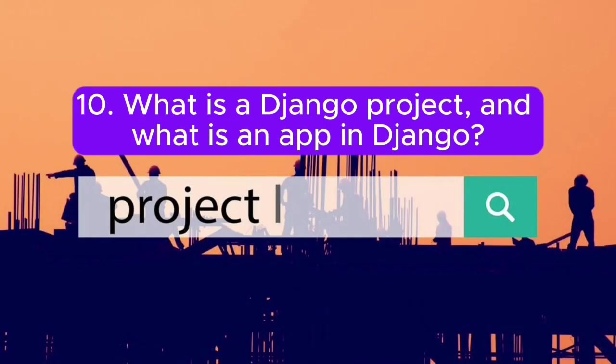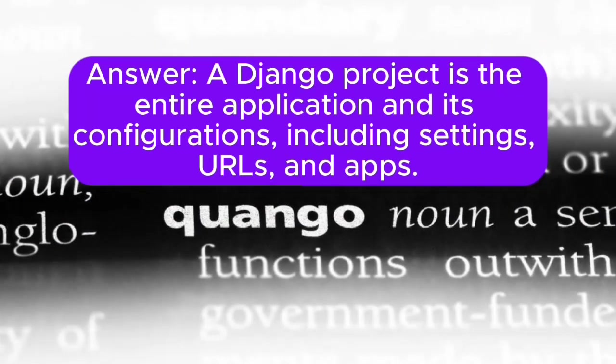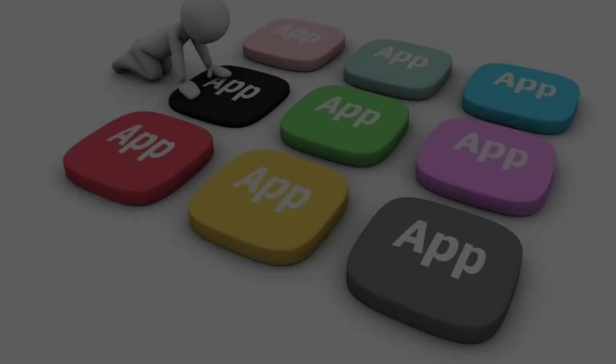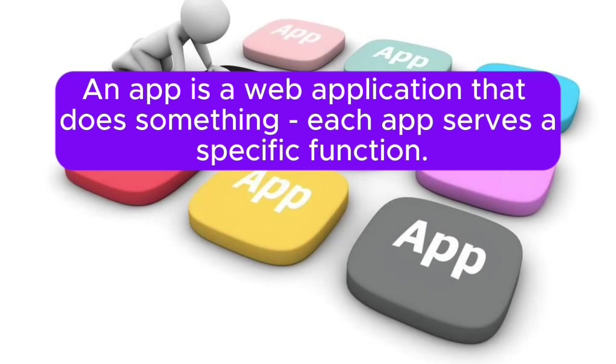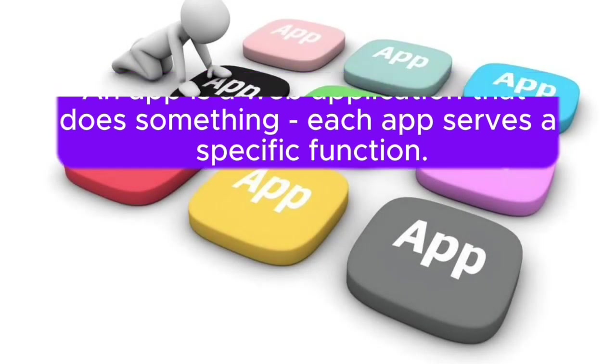Question 10: What is a Django project, and what is an app in Django? Answer: A Django project is the entire application and its configurations, including settings, URLs, and apps. An app is a web application that does something; each app serves a specific function.